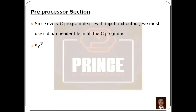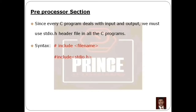The syntax to include a header file is: hash include, then angle brackets with the file name. Angle brackets means less than and greater than. For example, to include the stdio.h header file: hash include, less than, stdio.h, greater than.